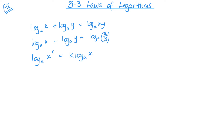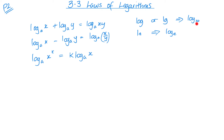Just before we look at a couple of special cases, I want to mention a couple of log notations. Often if you just see the word log with no base, or you see lg, this means it's going to be a log to the base 10. If you see ln, that means it's a natural log — log to the base e. Log to the base 10 and log to the base e are the two most commonly used logs, which is why we have abbreviations: ln for natural log, lg for log to the base 10.